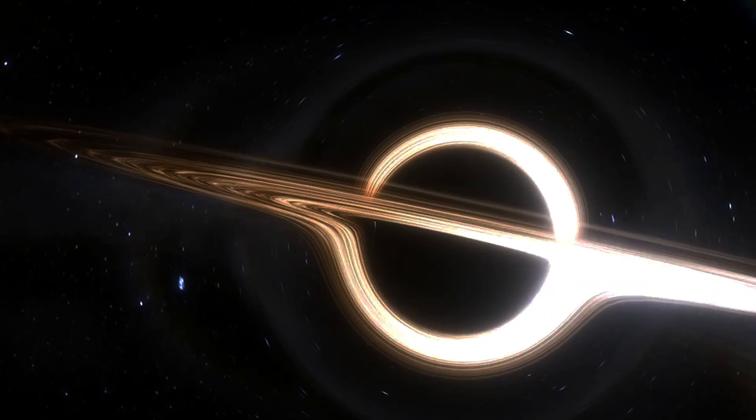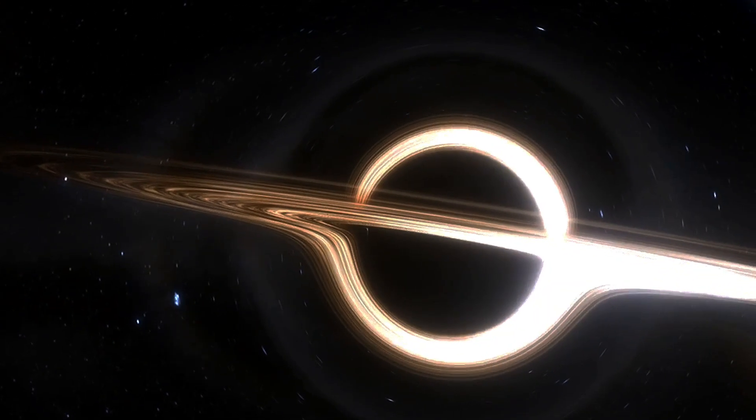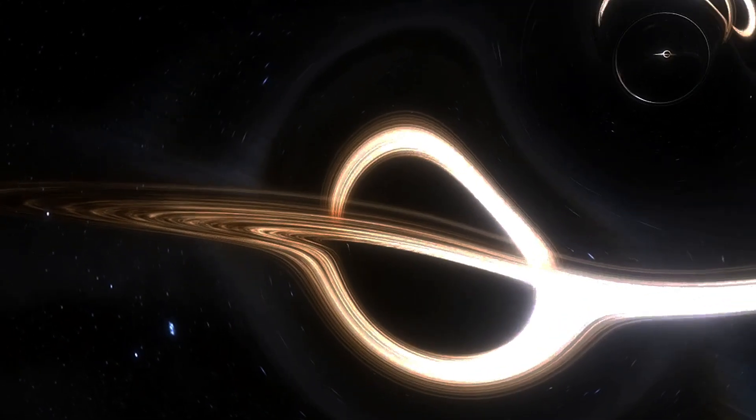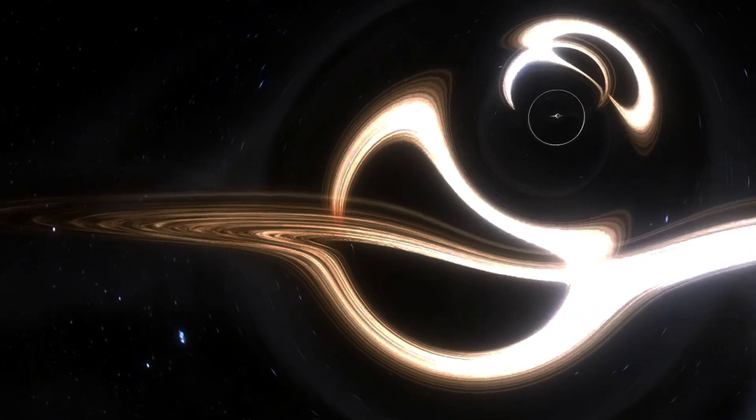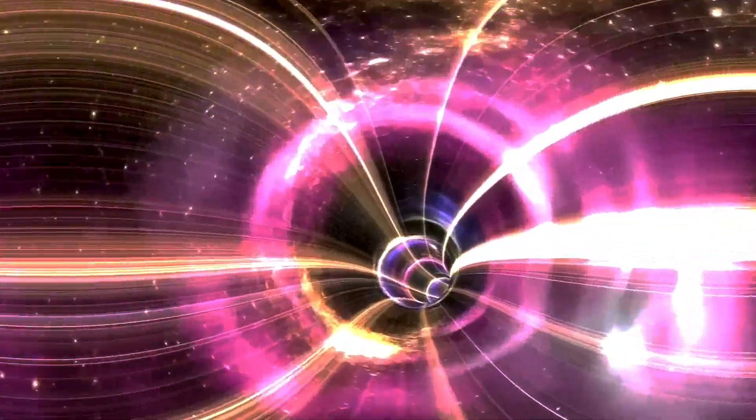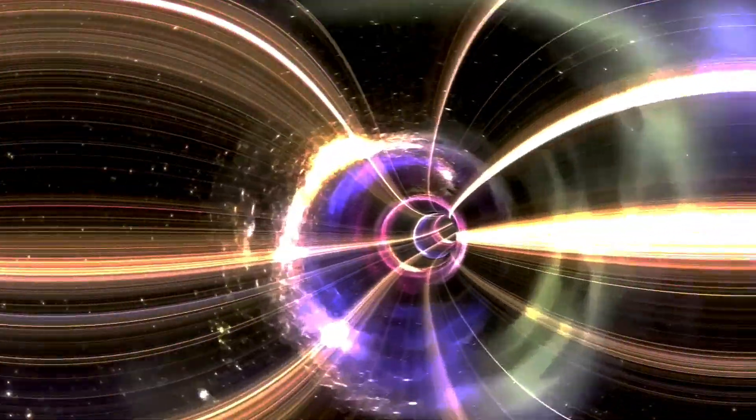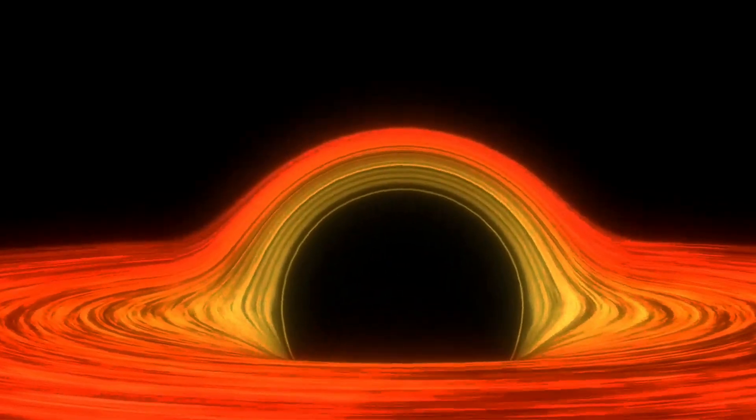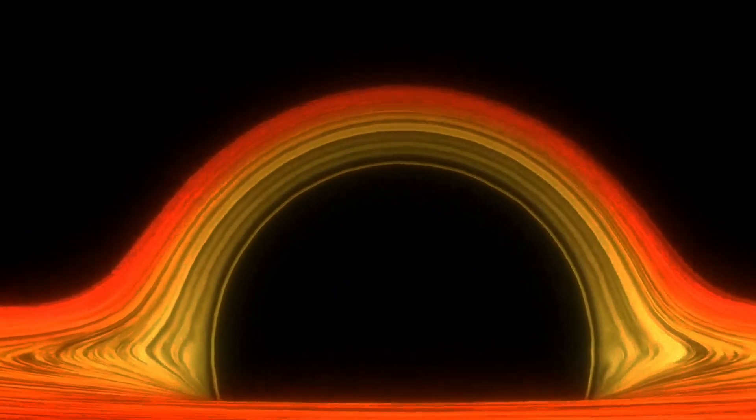These Einstein-Rosen bridges, unfortunately, came along with some very troubling consequences, what physicists often call pathologies in the theory. These wormholes would be unstable, in the sense that they could not be maintained as permanently open and traversable entities. They would instantly pinch off and collapse, for one. And if you attempted to pass any matter through them, the gravitational tidal forces from the severe curvature of space would absolutely destroy it.